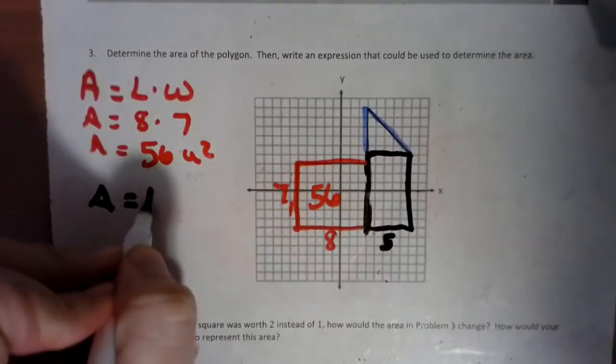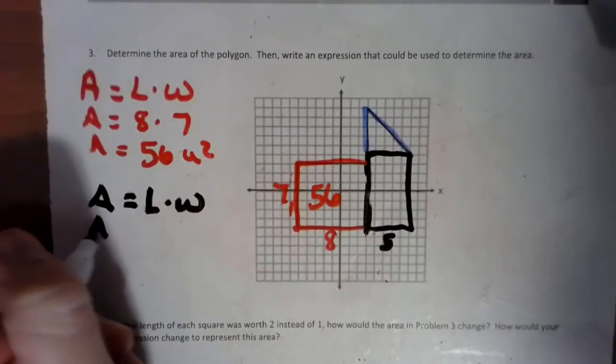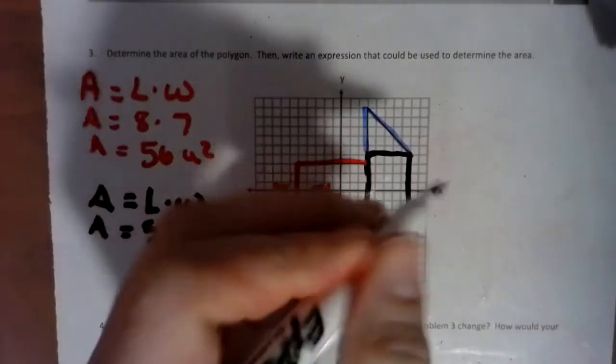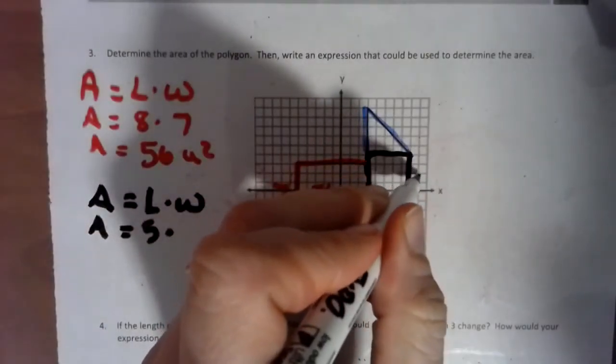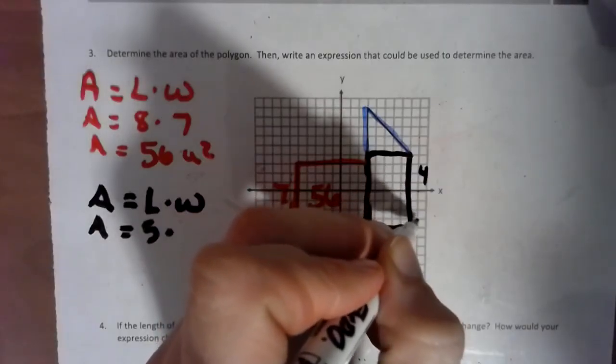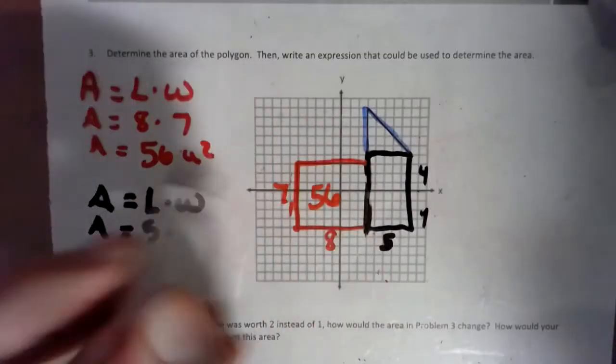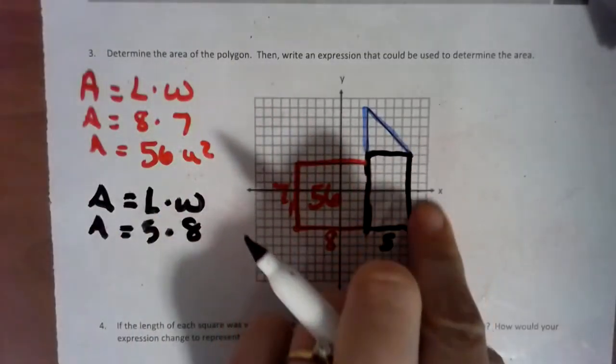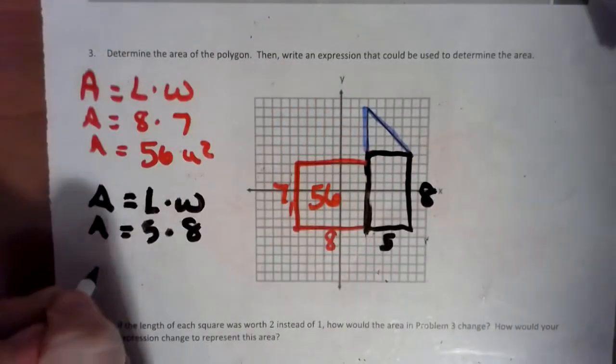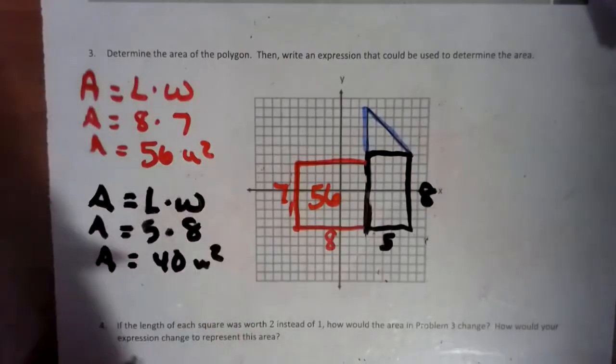So, we have area equals length times width. Area equals 5 times something. And we have 1, 2, 3, 4 there. And 1, 2, 3, 4 here. Together, 4 and 4 make 8. Get rid of that. That side's 8. Area equals 40 units squared.